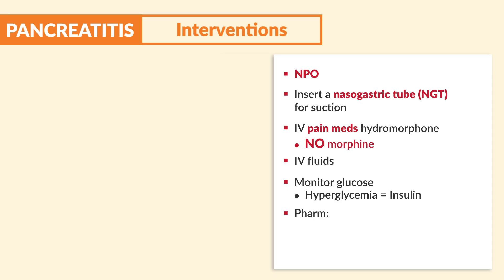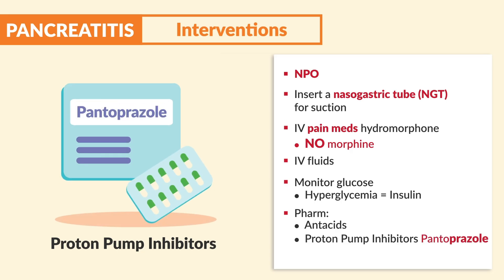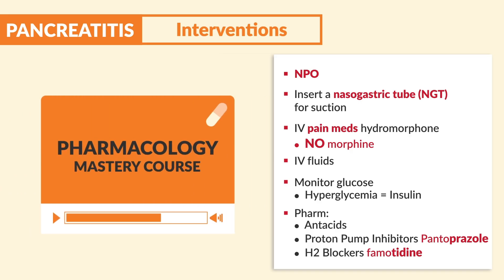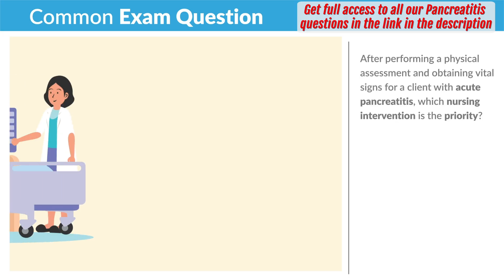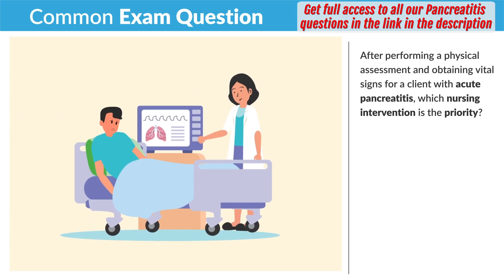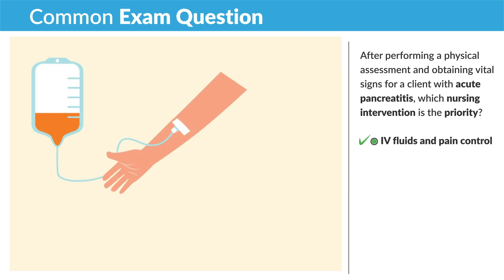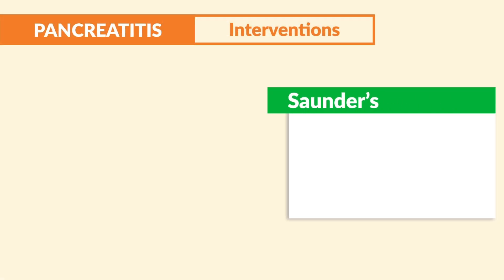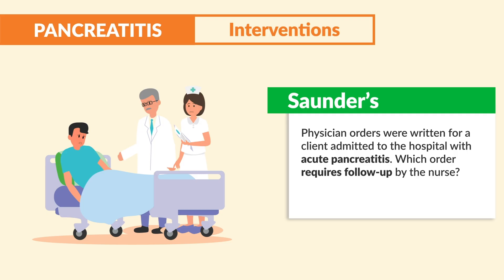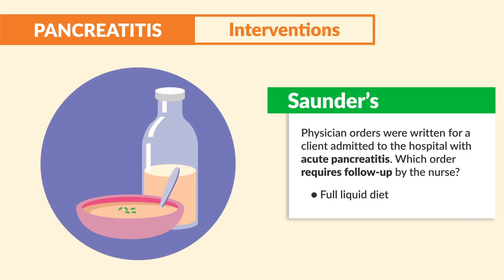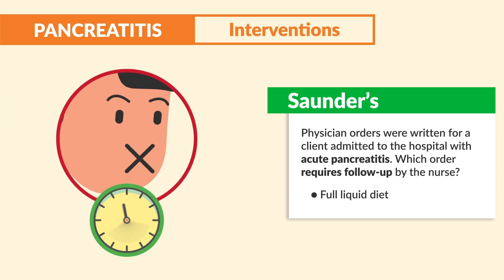For pharmacology, we use acid reducers: antacids, proton pump inhibitors (ending in -prazole, like pantoprazole), and H2 blockers like famotidine. A common exam question: after a physical assessment and obtaining vital signs for a client with acute pancreatitis, the priority nursing intervention is IV fluids and pain control. A Saunders question asks: which order requires follow-up for a client with acute pancreatitis? A full liquid diet — remember, clients should be NPO for at least 24 hours, so the nurse must call the doctor and question that order.